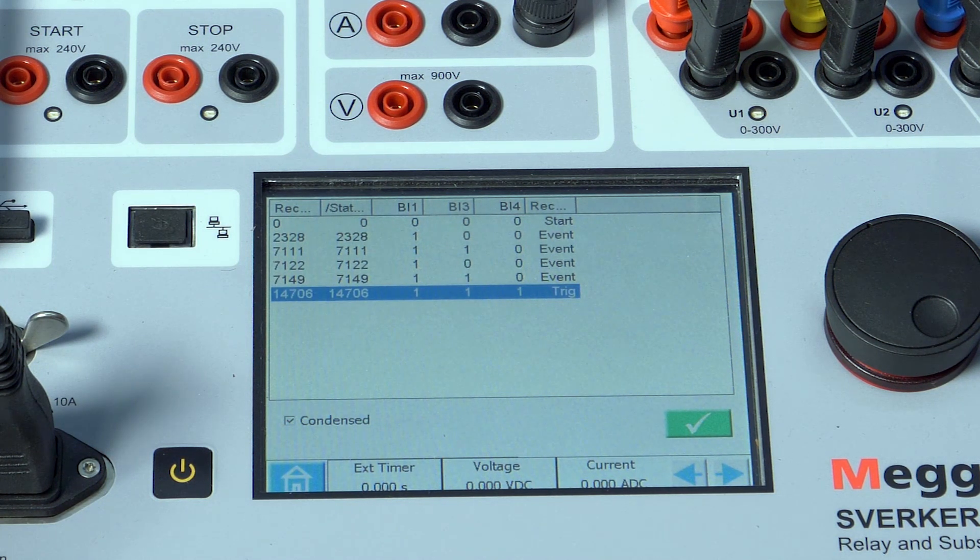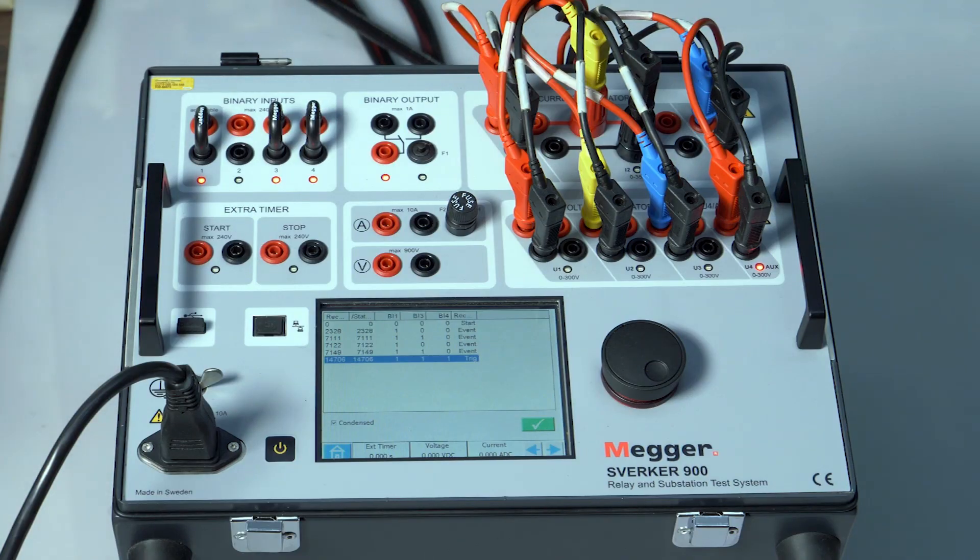In this manner, several combinations can be created based on the application. An application such as auto recloser feedback based on all pole open condition can be simulated. In this application, the R phase, the Y phase, and B phase are connected to binary input 1, binary input 2, and binary input 3 respectively.